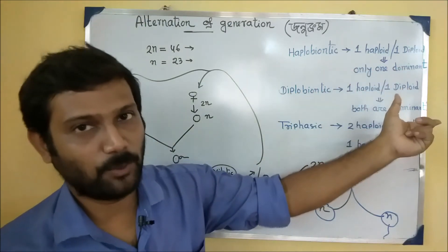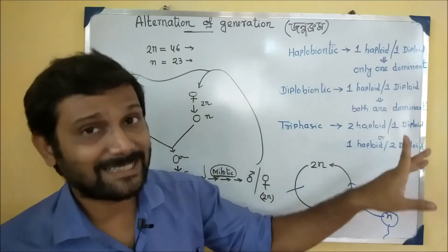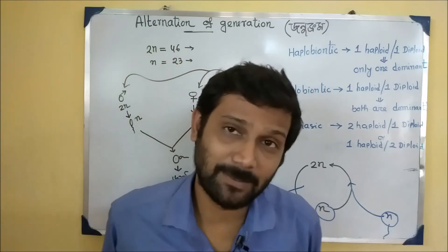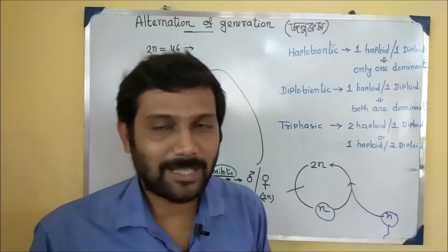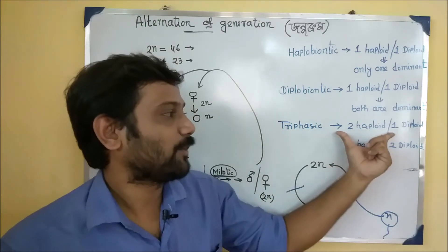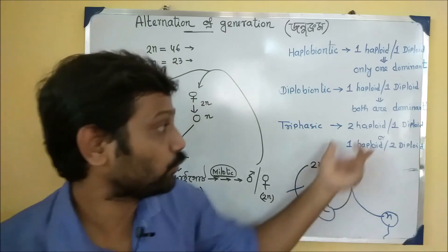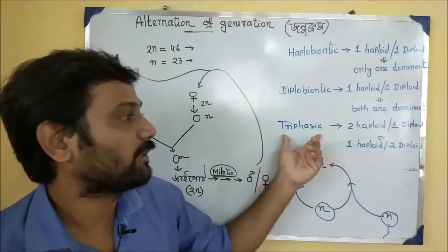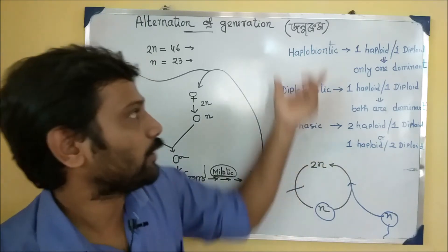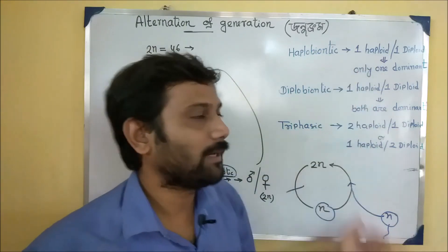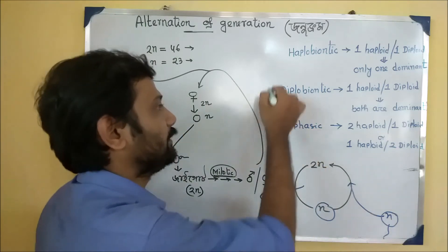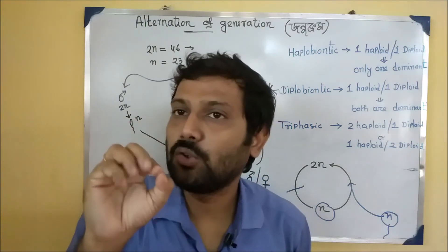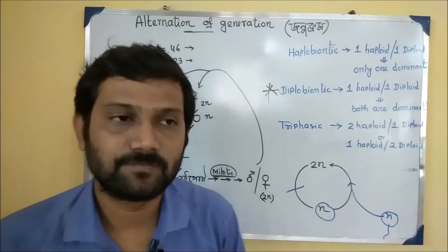Diplobiotic — active haploid, active diploid. Triphasic is also a category. So the life cycle is a pattern. You can say life-cycle. Diplobionic. Next, you can say Lingodhar and Renodhar — Gametophytic and Sporophytic. Lingodhar refers to the body that is ready to produce gametes.